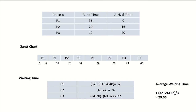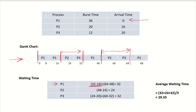Now let us calculate the waiting times. For P1, it arrived at time 0 and immediately got the processor, running until time 16. After that it had to wait from 16 to 32 — a wait of 16 time units — and then again from 48 to 64. The total wait time for P1 is 32 time units.